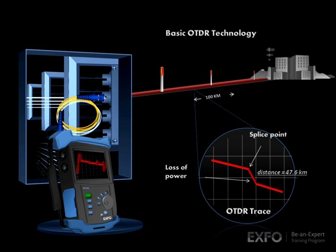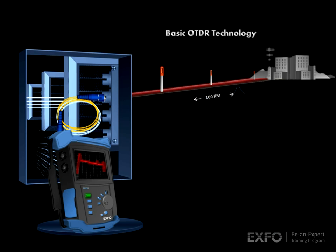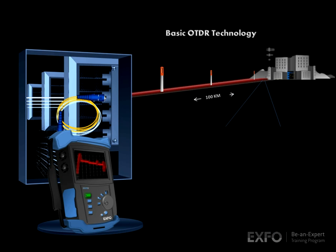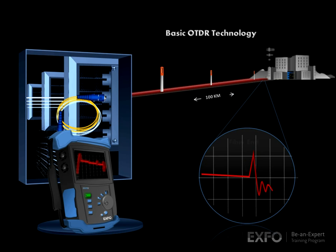The OTDR will accurately measure the distance to a splice and the loss of power at that particular splice. All reflective events are detected and measured for reflectance, power, and distance. Finally, the far end connection is detected and measured.